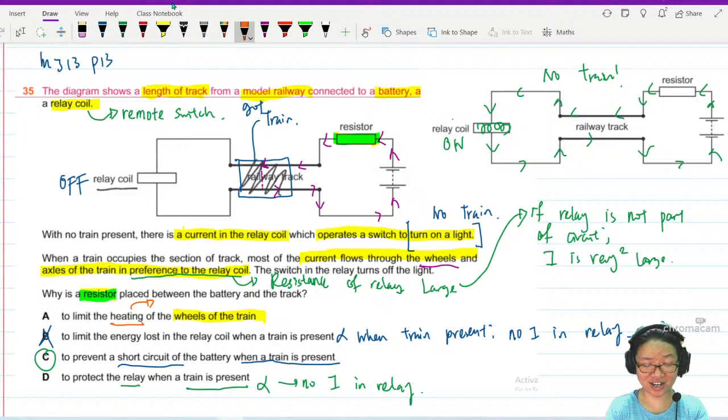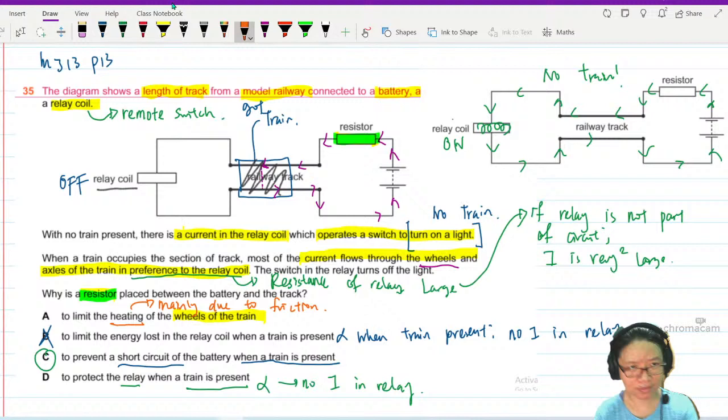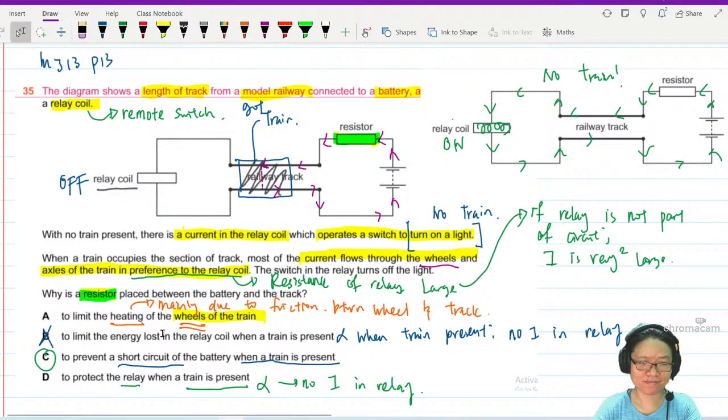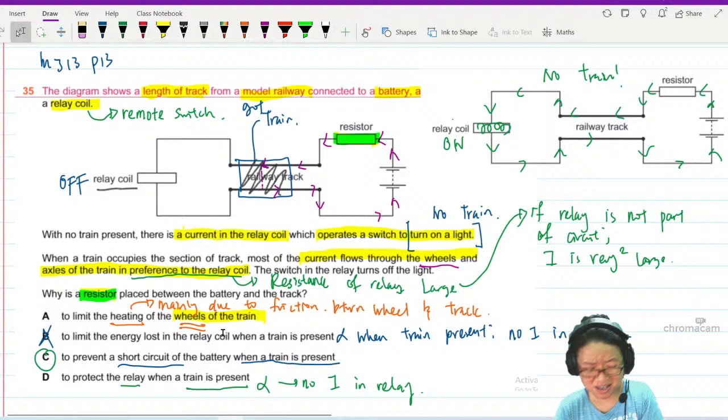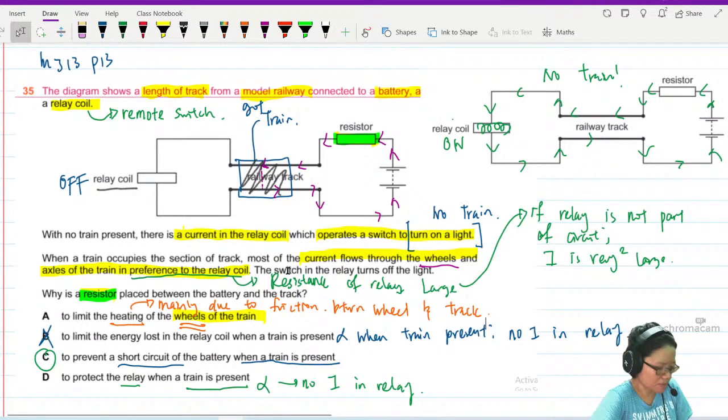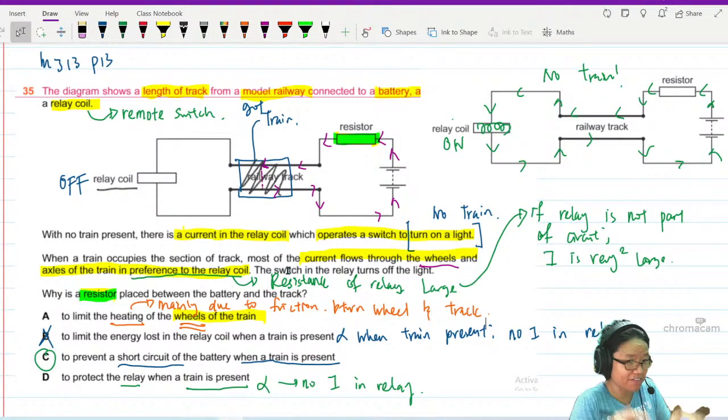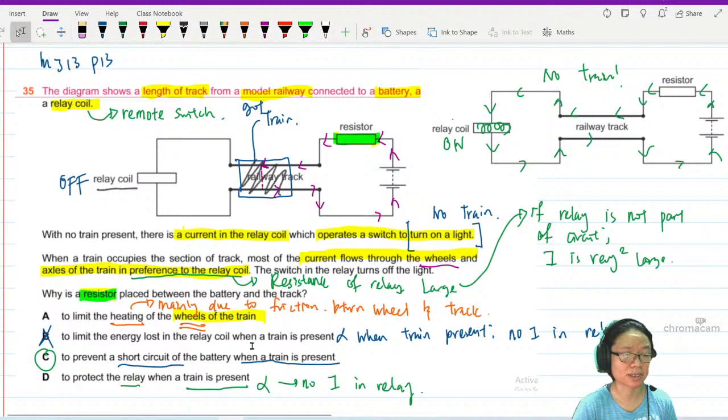The heating of the wheels of the trains when it goes round and round - there's friction mainly due to friction. It has nothing or little to do with the current. Come on man, it's a very big train. It doesn't care about the current. So mainly due to friction between the wheel and track. The wheels of the train will heat up - maybe the current only contributes one percent, 99% is friction. Unless you're talking about magnetic levitation train, that's a different train, different system. But this one is a regular train, and it's a model train. So the main reason here is we want to prevent short circuit when the relay is no longer part of the circuit, because the relay resistance is very large.